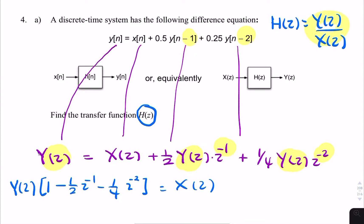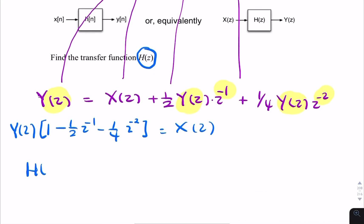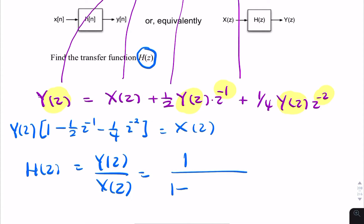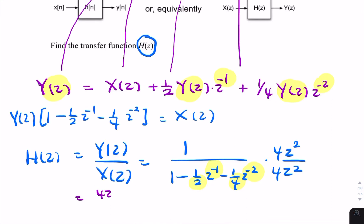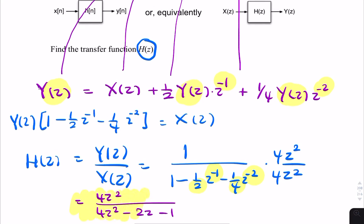Because we're looking for the transfer function, the final step gives H(z) = Y(z)/X(z) = 1 over (1 - ½z⁻¹ - ¼z⁻²). To eliminate negative powers, multiply by z²/z², and by 4z²/4z² to clear fractions. The final answer is 4z² over (4z² - 2z - 1).